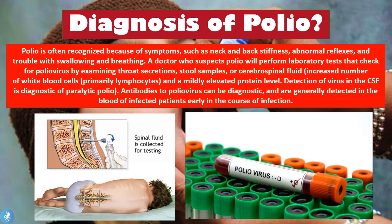Clinical suspicion of poliomyelitis is raised when the doctor observes signs such as neck stiffness, back stiffness, abnormal reflexes, and trouble with swallowing and breathing. Laboratory confirmation involves blood samples checked for antibodies against the poliovirus, throat secretions and stool samples tested for the virus, and CSF samples analyzed for the virus itself, elevated lymphocyte counts, or elevated protein levels. These are the various ways to confirm a diagnosis of poliomyelitis.